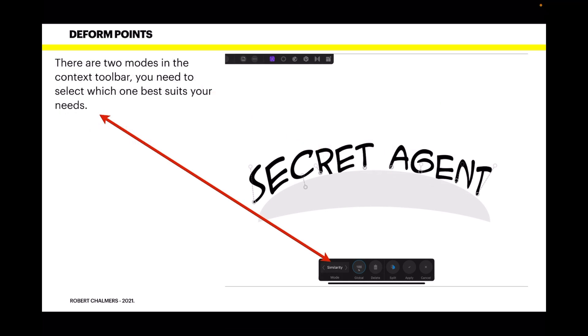Now there are two modes in the context toolbar. You need to select which ones best suits your needs. Now you can use similarity or rigid. I've got similarity selected there, but the default is rigid. Rigid meaning simply that all the letters around it will deform along with the one you're moving. Now the trick here is if you hold one of those points and drag it, it also affects the other letters in that group to some degree or another, depending on whether it's similarity or rigid. Now you really want to experiment with this to find out which is the one that suits your needs best.